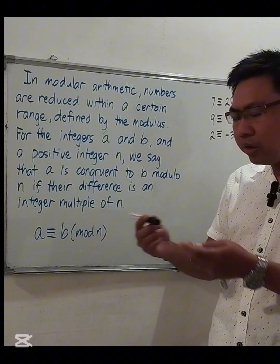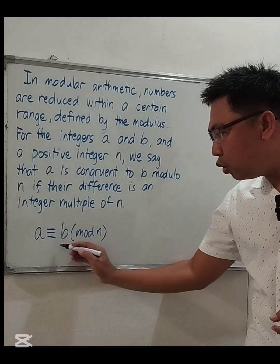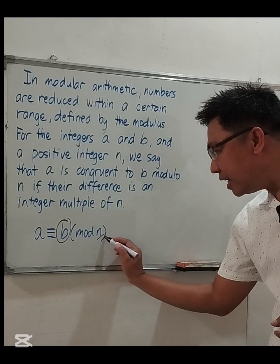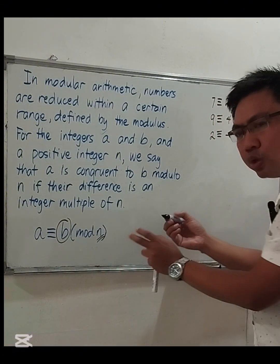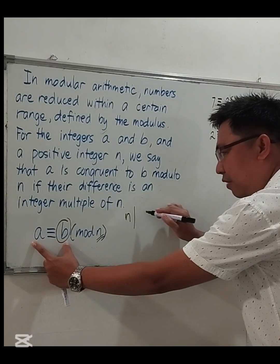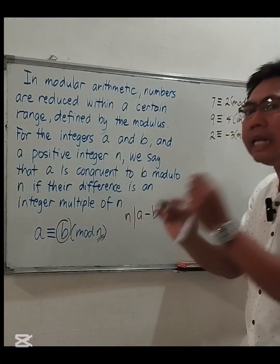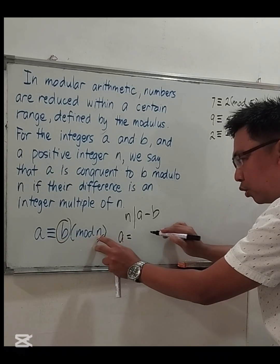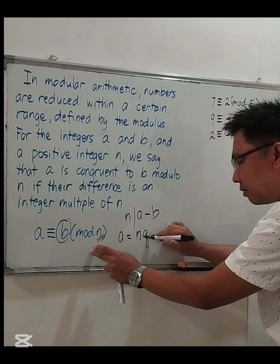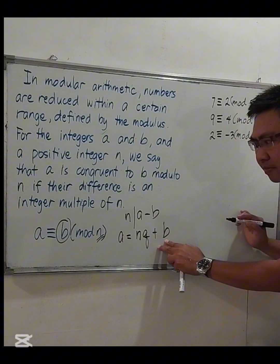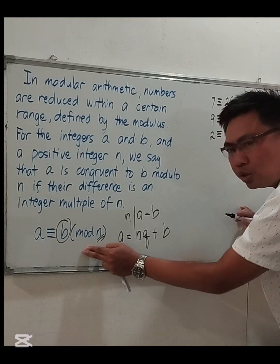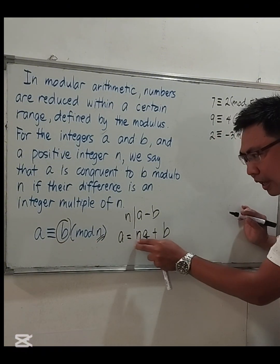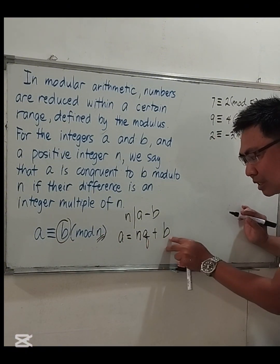In modular arithmetic, we are only interested in the remainder. So if a is congruent to b modulo n, b is called the residue and n is the modulus. This means n divides their difference a minus b. Using the division algorithm, a is equal to n times the quotient q, plus b, where b is the remainder.